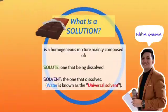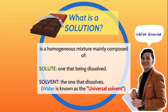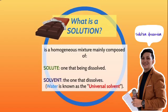Let us define what is a solution. A solution is a homogeneous mixture mainly composed of solute and solvent. Solute is the one being dissolved, and solvent is the one that dissolves. Water is known as the universal solvent, and also acid, because anything can be dissolved in acid as well.